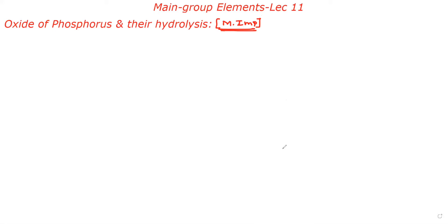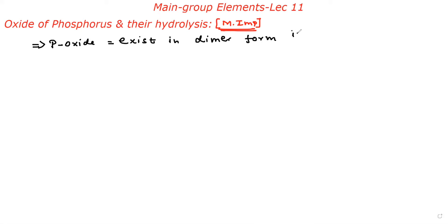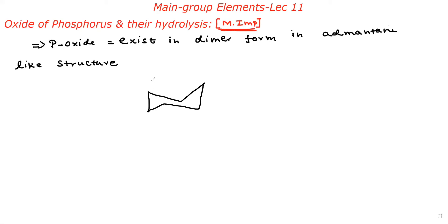First, I give you the basic introduction about what is the oxide of phosphorus. Please note: the phosphorus oxide exists in dimeric form — very important. The dimer form has an adamantane-like structure — very important. What is an adamantane-like structure? Please note this adamantane system. A-D-A-M-A-N-T-A-N-E — adamantane.